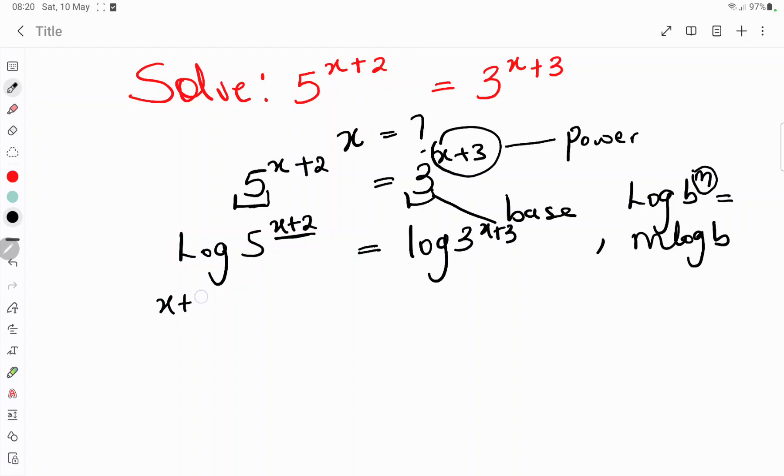We have it as x plus 2 in a bracket, log 5, is the same thing as x plus 3, the power multiplying the log, log 3.